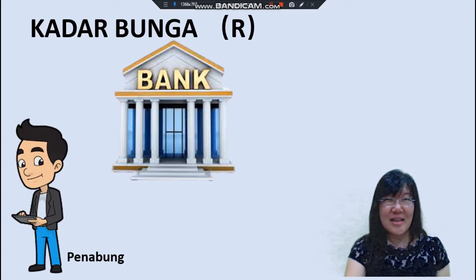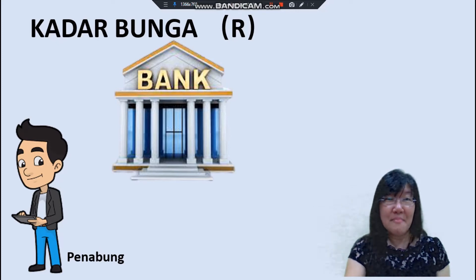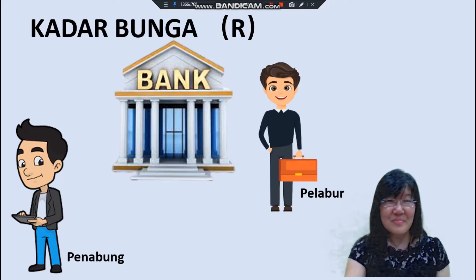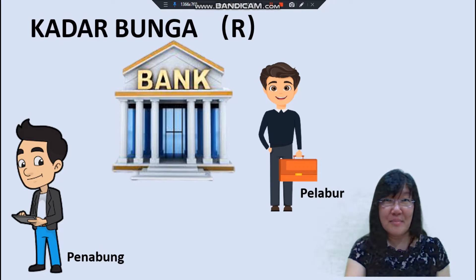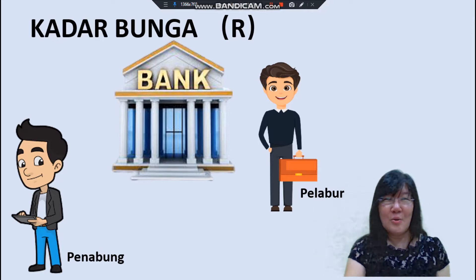Salah satu golongan adalah dikenali sebagai penabung. Siapa penabung ini dan apakah mereka buat di bank? Penabung adalah mereka yang menyimpan wang di dalam bank. Manakala, satu lagi golongan adalah dikenali sebagai pelabur — mereka biasanya adalah firma, majikan ataupun pengeluar, iaitu golongan yang meminjam wang daripada bank.